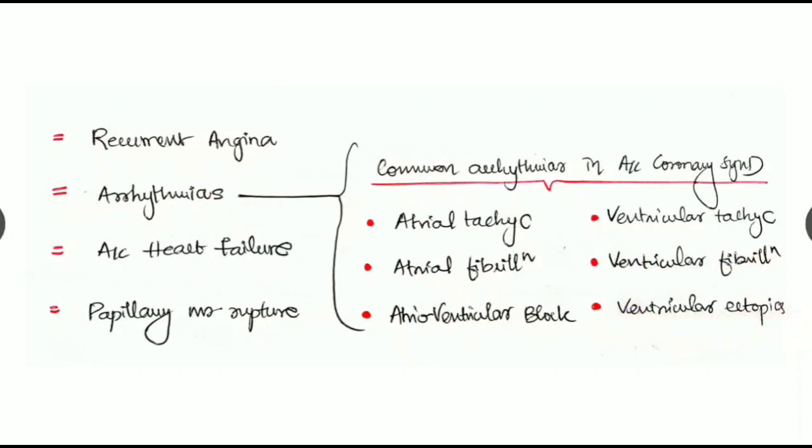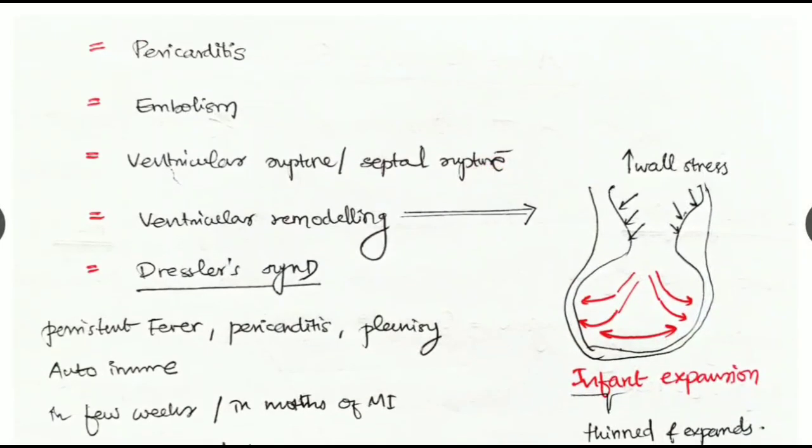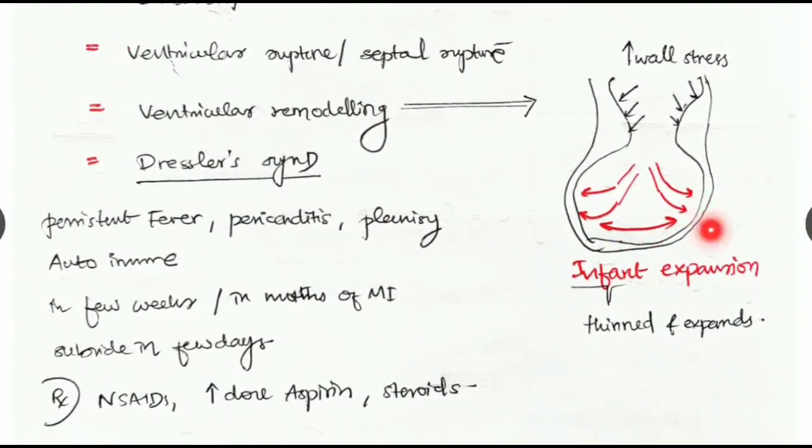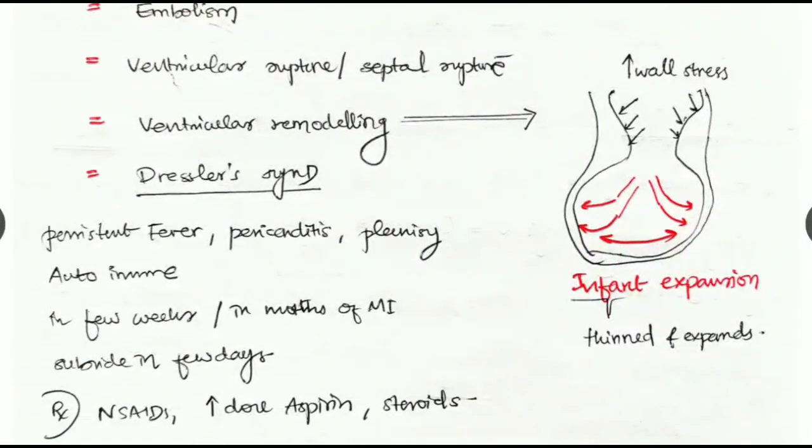This MI can also cause pericarditis, embolism, ventricular rupture or septal rupture, and ventricular remodeling. Ventricular remodeling means in case of any infarct in the lower wall, the inferior wall, it expands and the wall is thinned out and expands slowly with development of raised wall stress in the upper side.